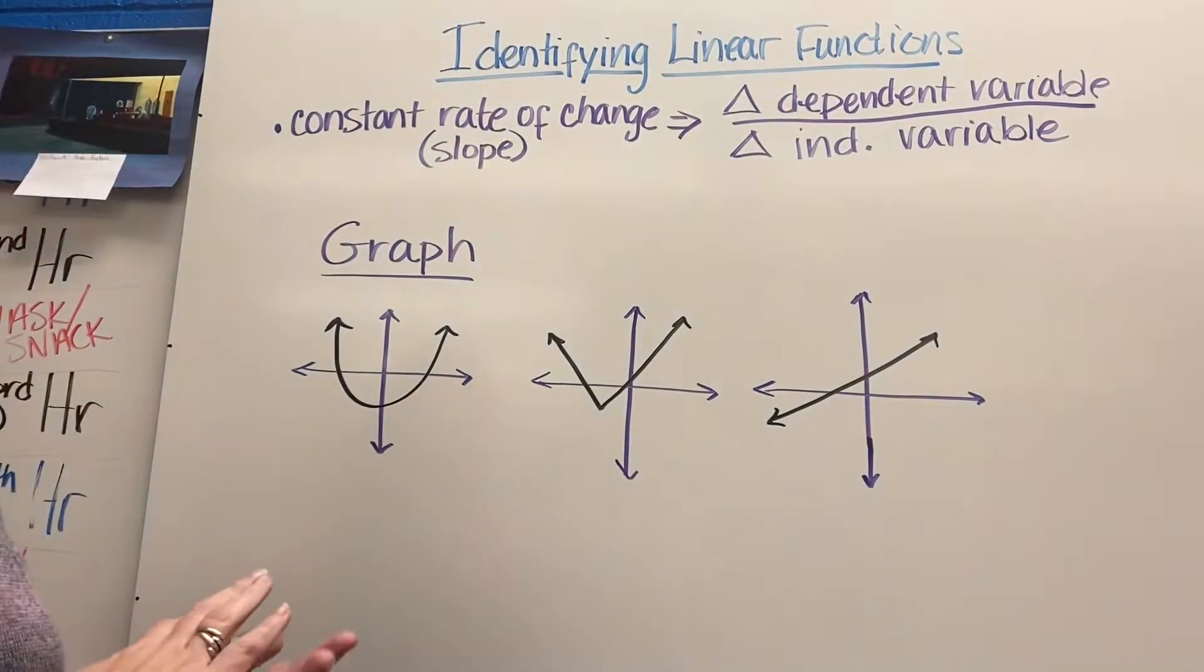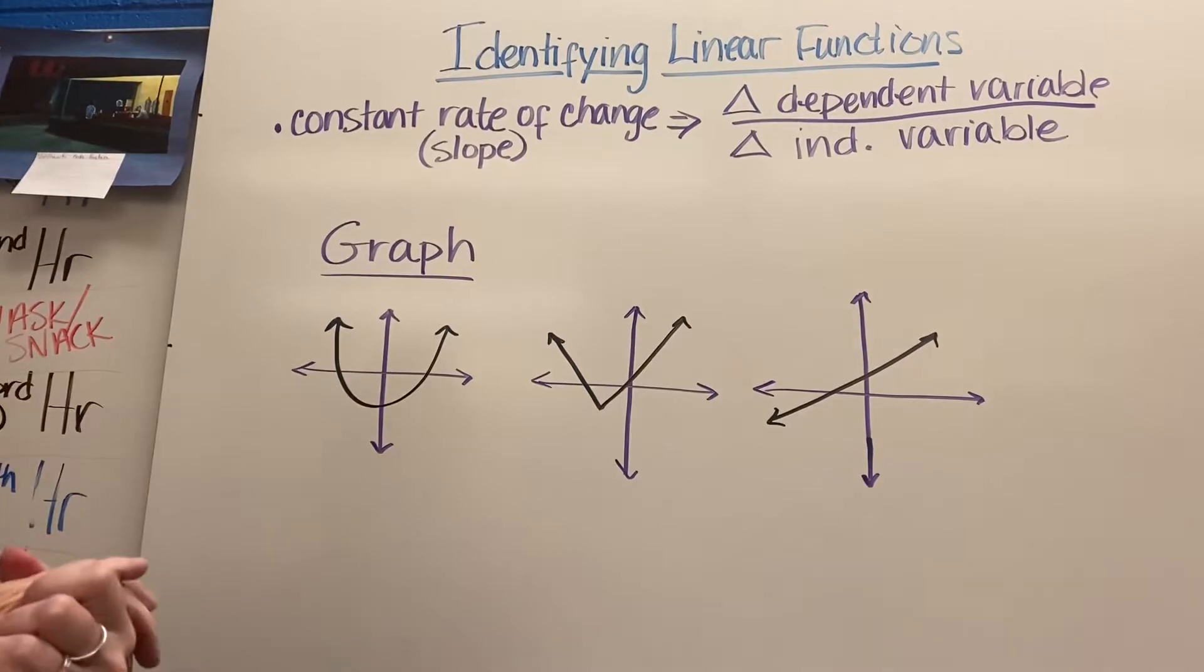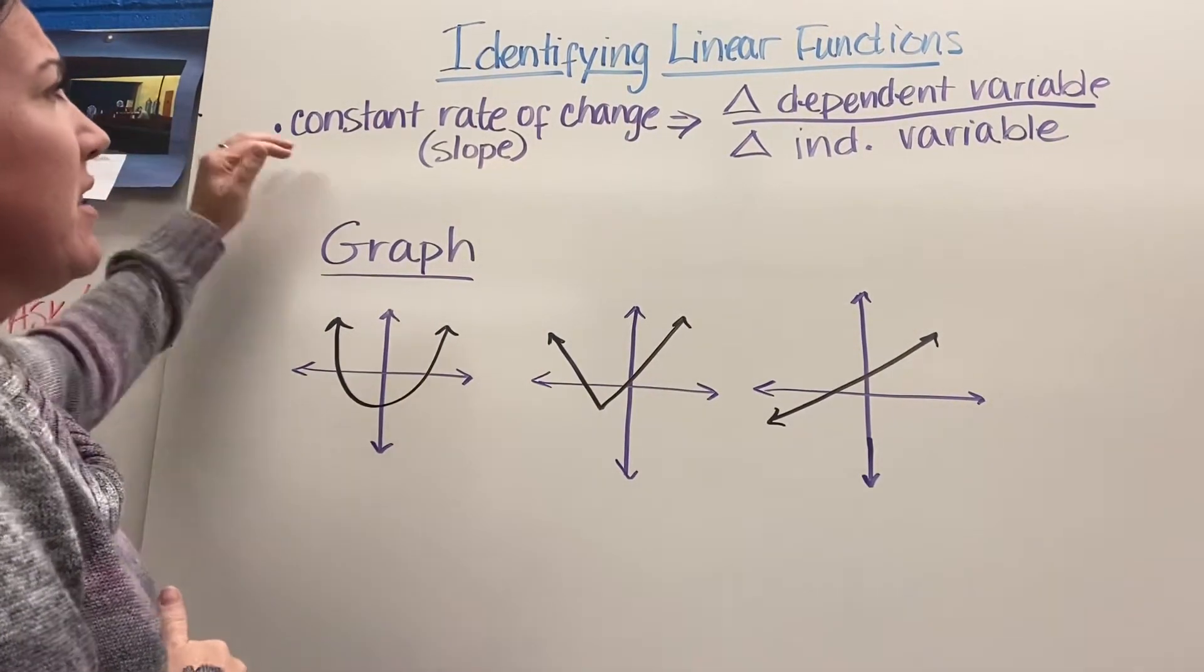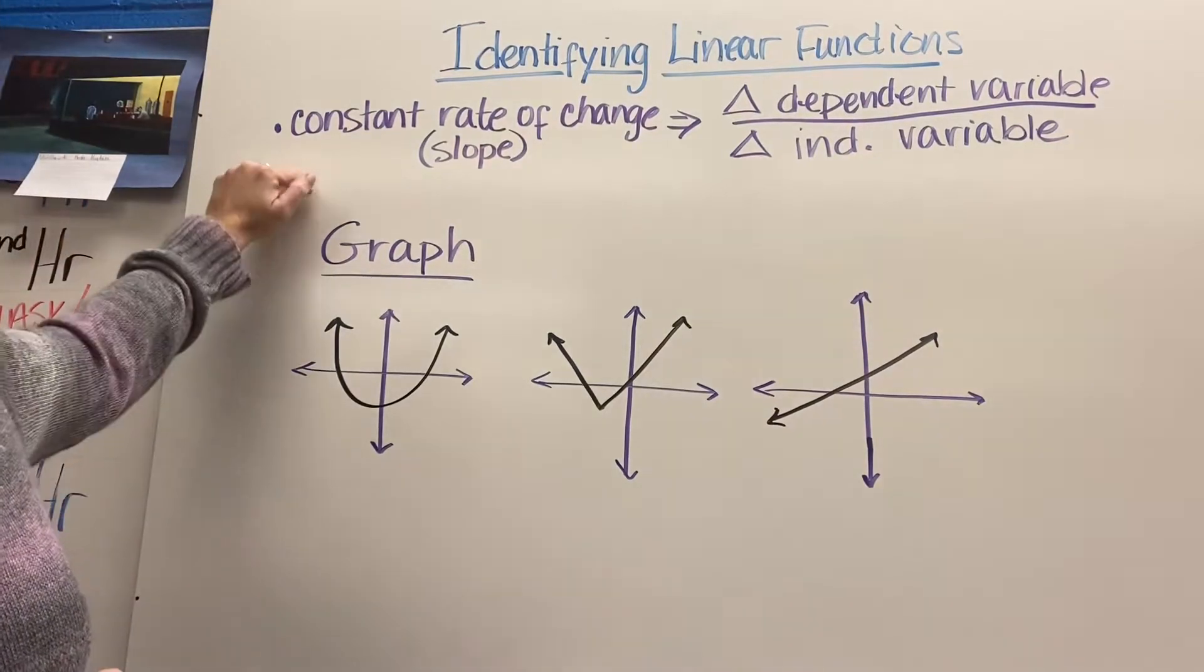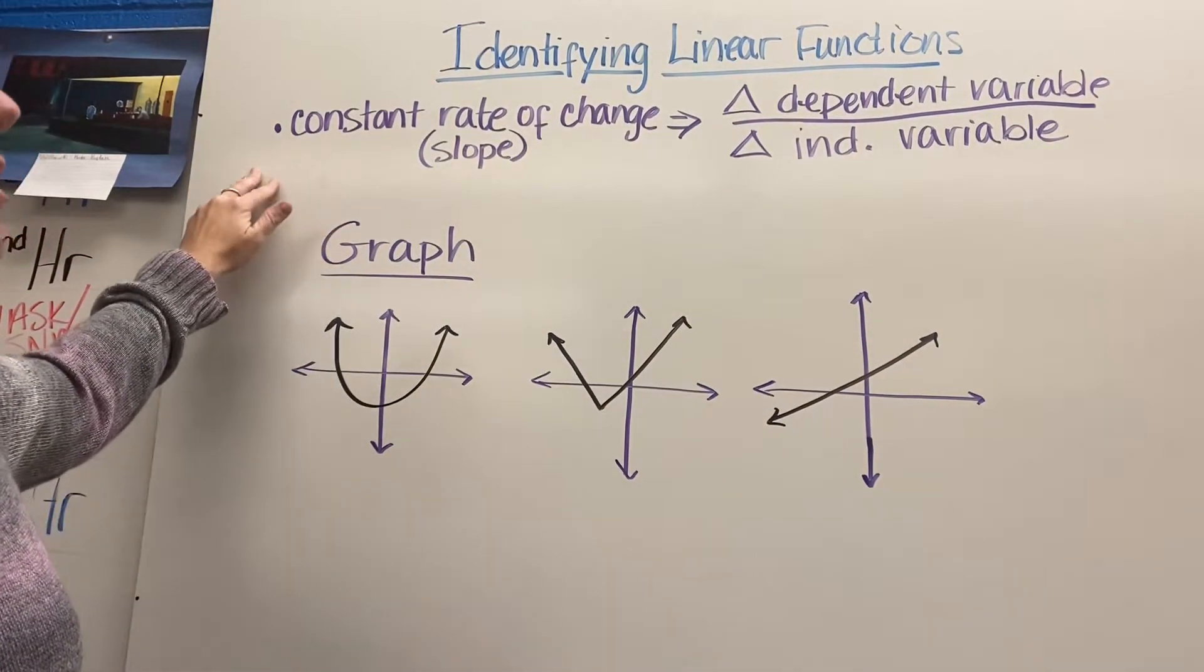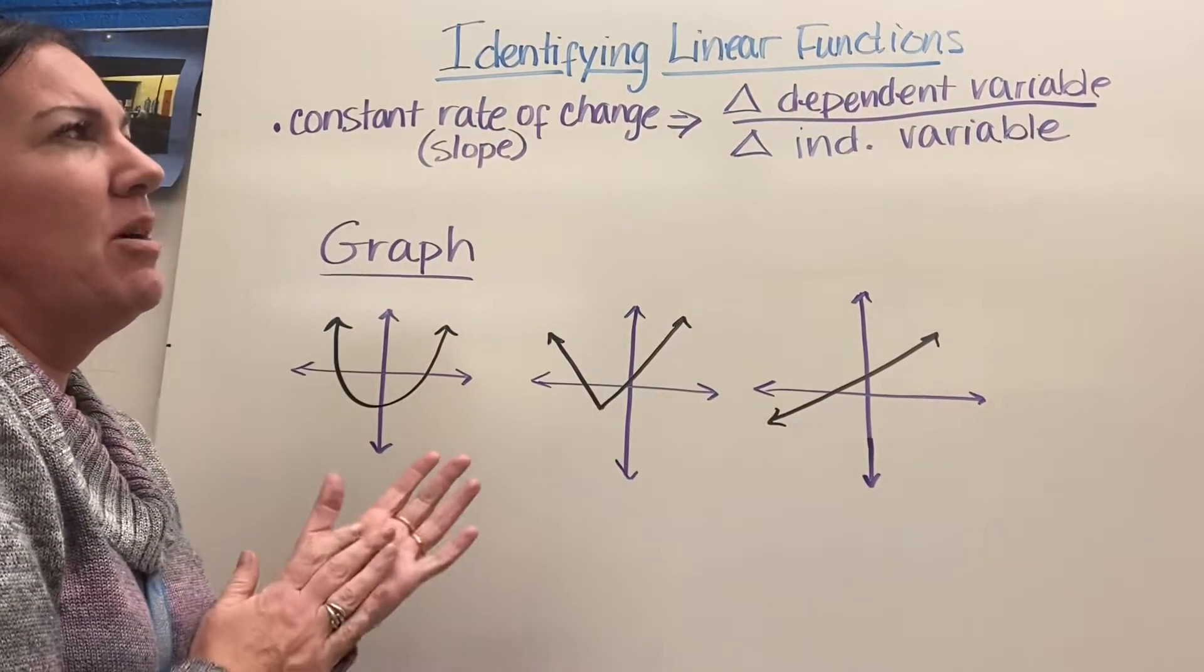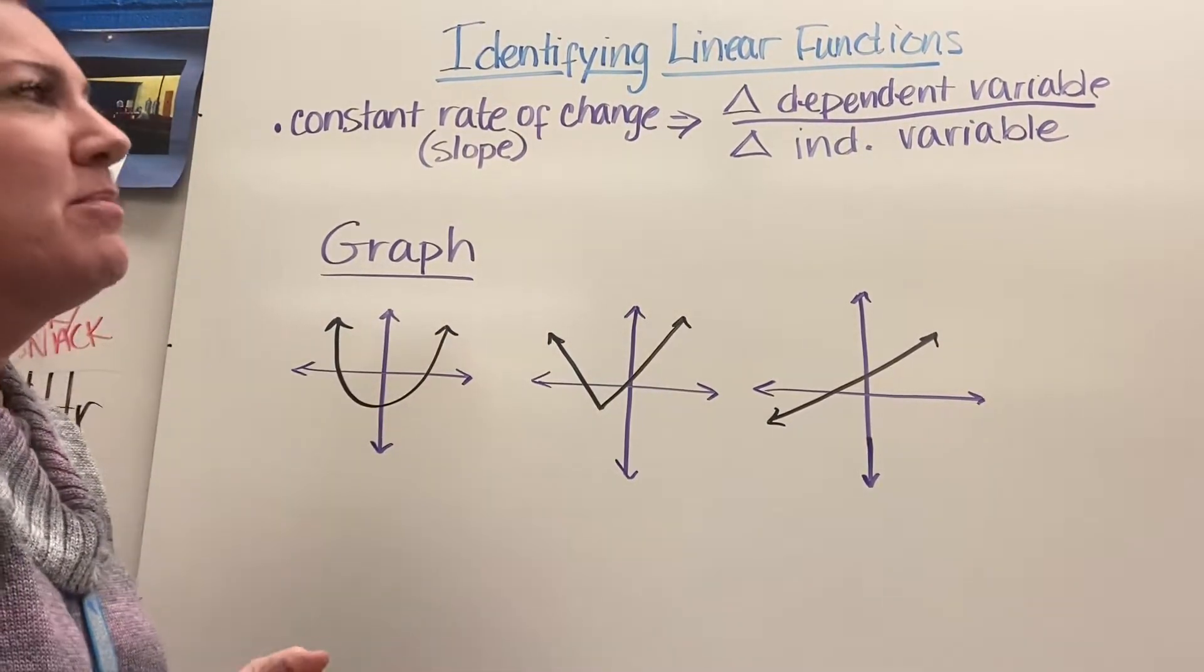We're going to look at identifying linear functions today. For a linear function, they tend to have a constant rate of change, which is another word for slope. When we look at that, it's the change in the dependent variable divided by the change in the independent variable.